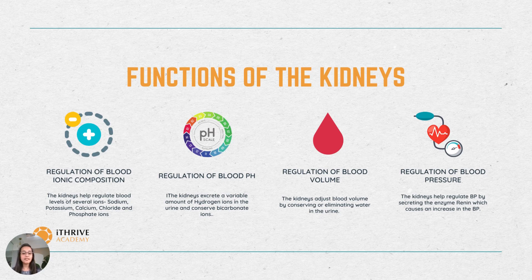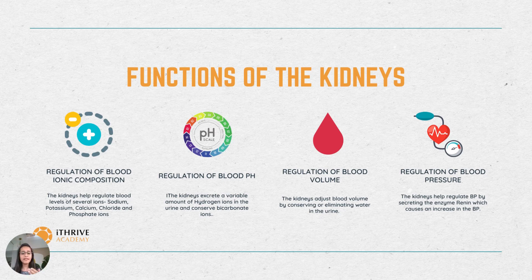The next function is that kidneys help in regulation of blood pH. The kidneys excrete a variable amount of hydrogen ions into the urine and conserve bicarbonate ions. Bicarbonate ions are an important buffer of hydrogen in the blood. Hydrogen ions usually make our blood acidic, and that is how kidneys excrete variable amounts of hydrogen and help maintain the pH.